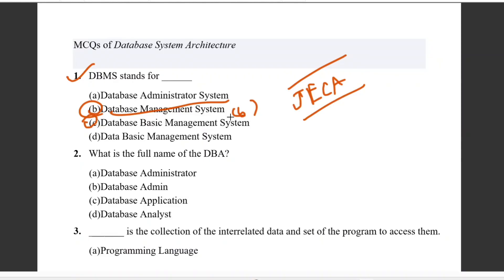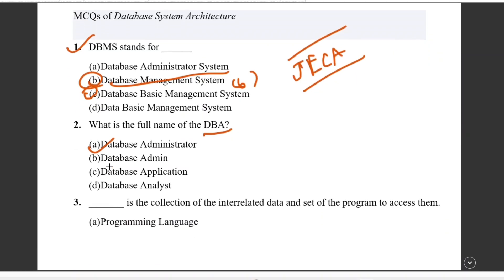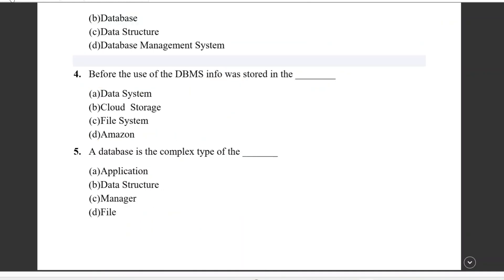Next question: the full form of DBMS. It is a basic question. A database is a collection of interrelated data and a set of programs to access them. We have interrelated data and programs to access them. So right answer is database. It is option B.